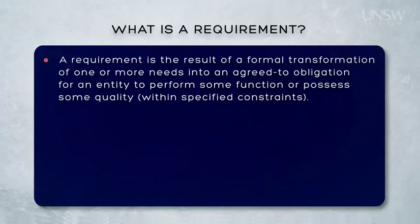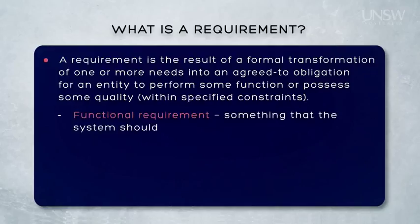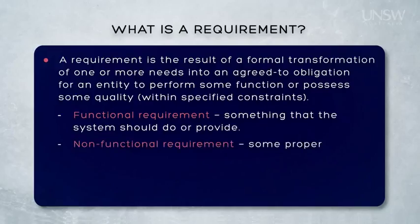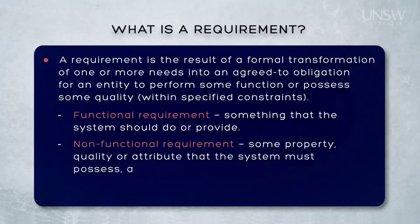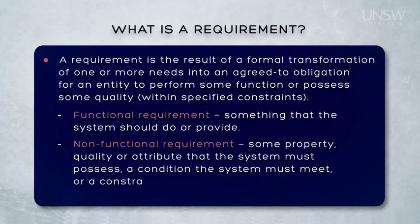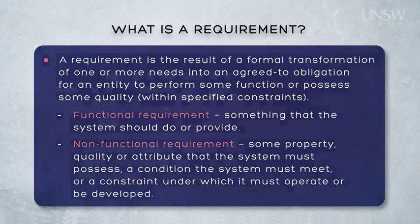Because we're talking about performing some function or possessing some quality, it's quite common to refer to two major categories of requirement. The first is a functional requirement — something the system should do or provide. The remaining types of requirements are often called non-functional requirements. That is, they refer to some property or quality that the system must possess, or a condition it must meet, or a constraint under which it must operate or be developed.